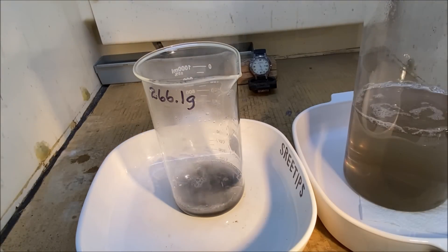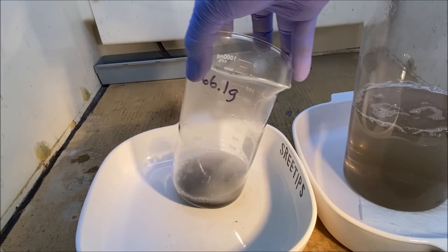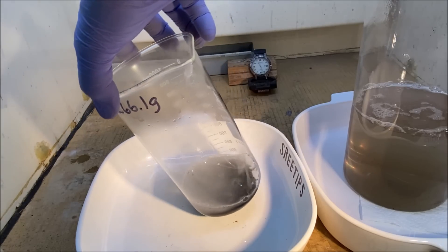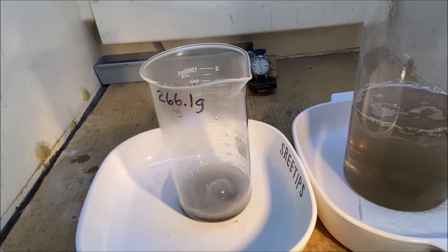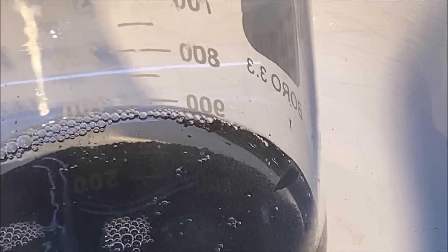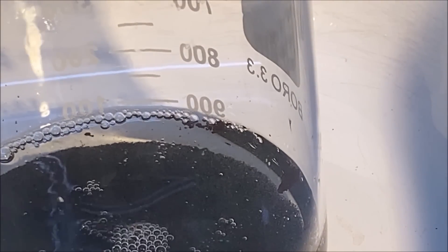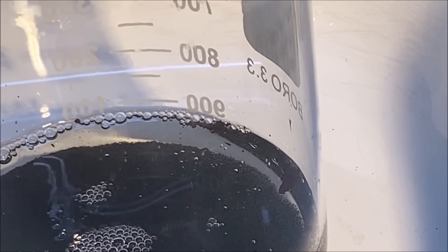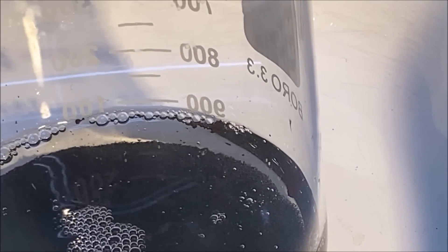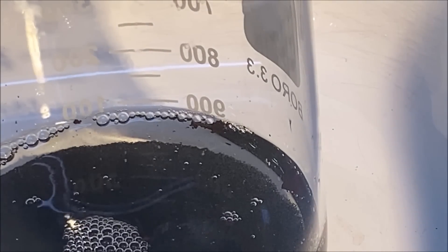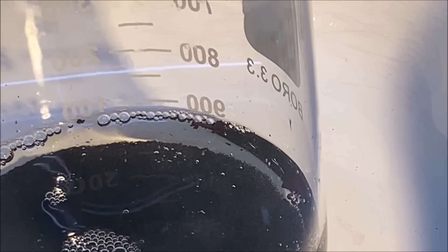And you can see the zinc reacting with that hydrochloric acid. This is how we're going to get all the zinc out of there. Just hit it with some hydrochloric acid until there's no more reaction. And then we can pretty much conclude that all the zinc has been dissolved.